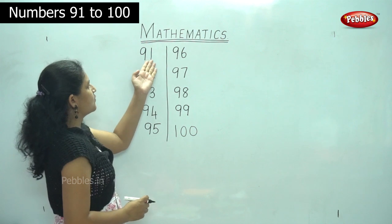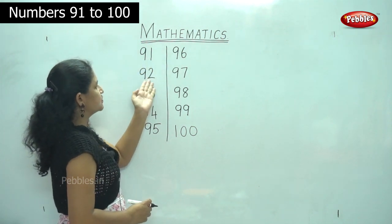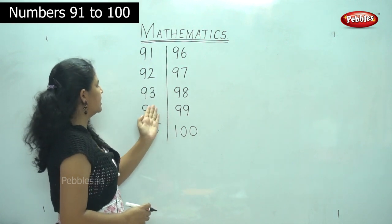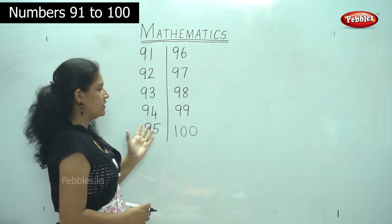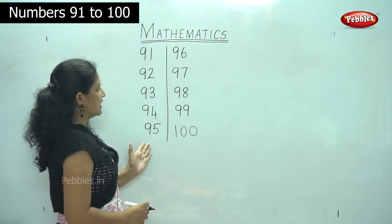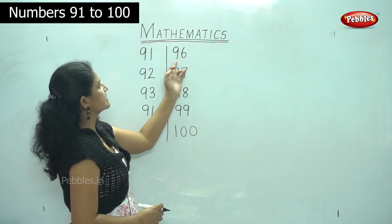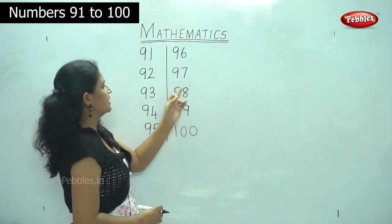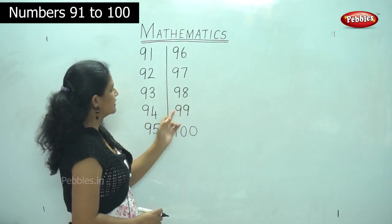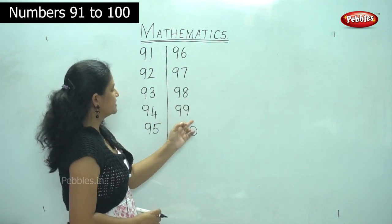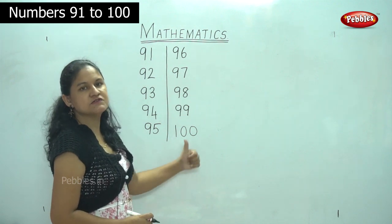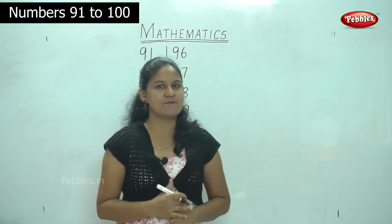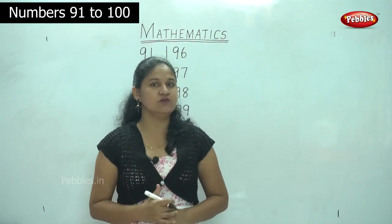Let's review: 9 and 1 is 91; 9 and 2 is 92; 9 and 3 is 93; 9 and 4 is 94; 9 and 5 is 95; 9 and 6 is 96; 9 and 7 is 97; 9 and 8 is 98; 9 and 9 is 99; and 1, 0, 0 which is 100. So we have learnt numbers from 1 to 100.